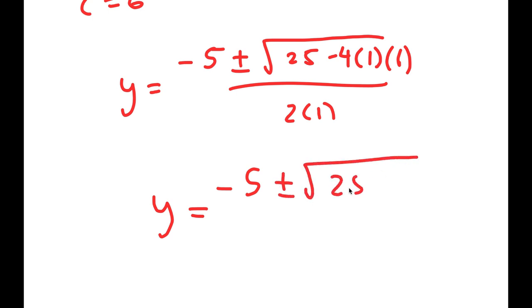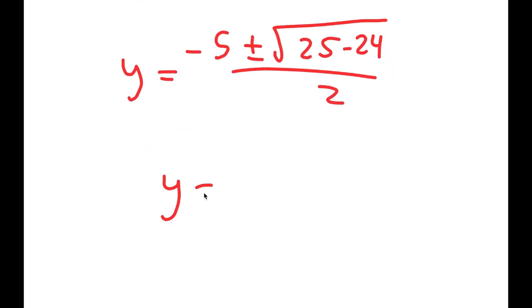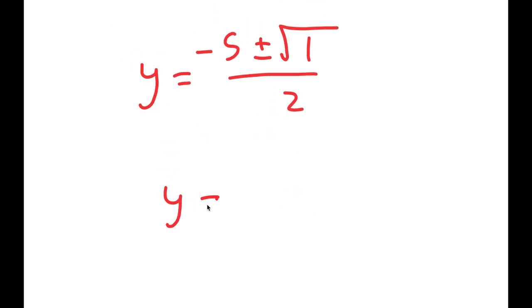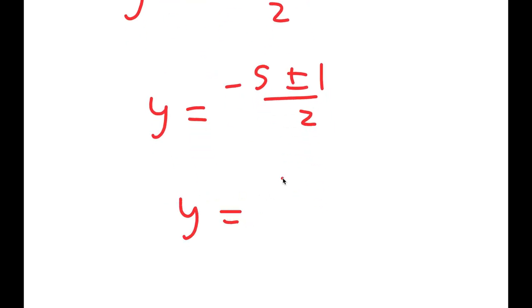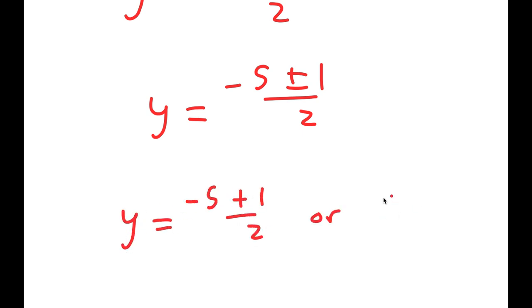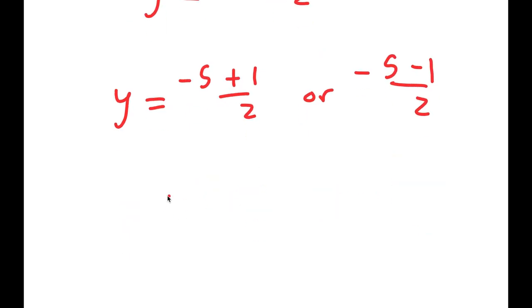This simplifies to negative 5 plus or minus the square root of 25 minus 24, over 2, which is negative 5 plus or minus the square root of 1, over 2. The square root of 1 is just 1, so I get negative 5 plus or minus 1, over 2. This gives two solutions: y equals negative 5 plus 1 over 2, which is negative 2, or y equals negative 5 minus 1 over 2, which is negative 3.